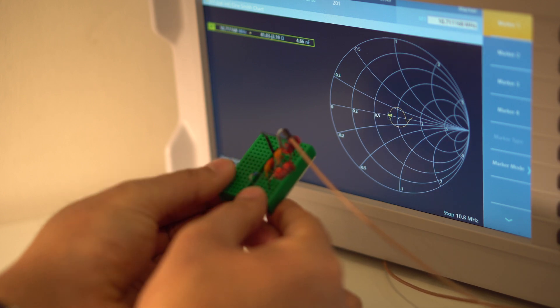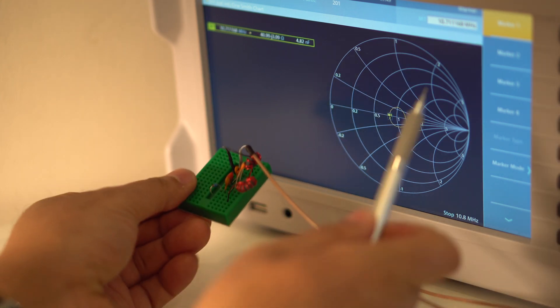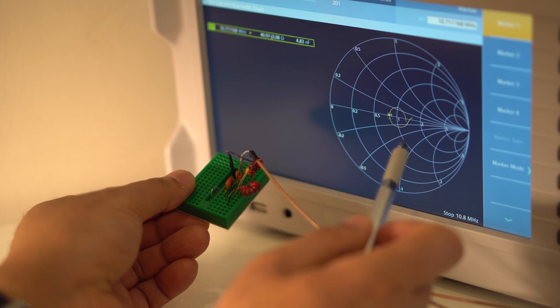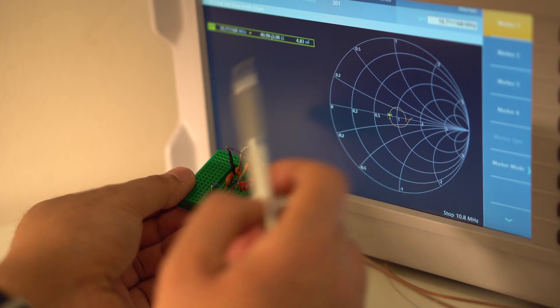There we go. Back to where it was before. So that proves now that once the output impedance is at 50 ohms, then the input is matched as well at 50 ohms.